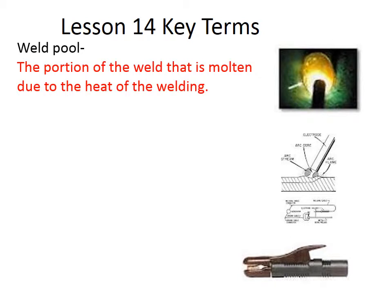The weld pool is the area you focus on while welding — the arrow points to molten metal, which is so hot it has become liquid. This is a picture of an electrode, which melts to form the weld bead. The weld pool is the portion of the weld that is molten due to the heat of welding. The trick to welding is to watch this puddle and make sure it is uniform throughout — don't watch the bright light, as it will be very distracting.